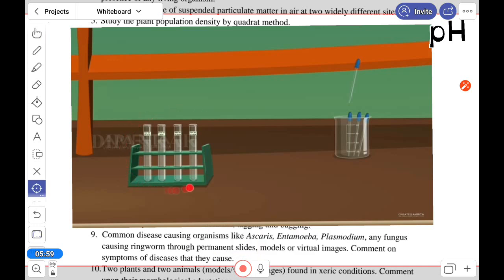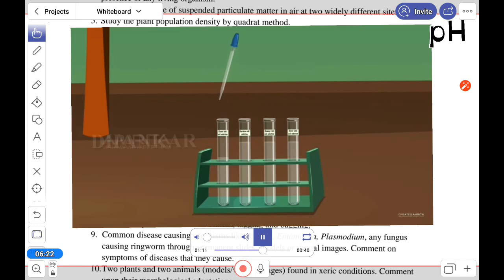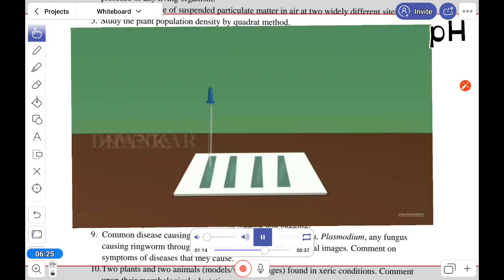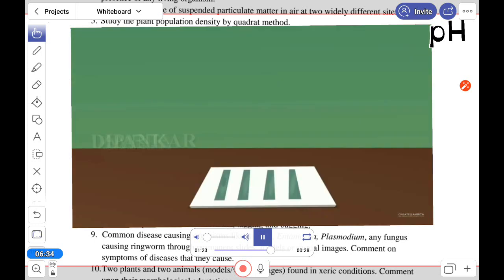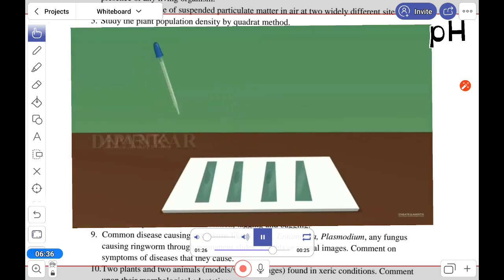When we find out the pH of pond water or other water bodies, water will be collected directly and the experiment will be the same as before. In case of water, we are using two different water bodies to find out the pH. When we test water, this practical will be a little bit shorter because we use water directly.